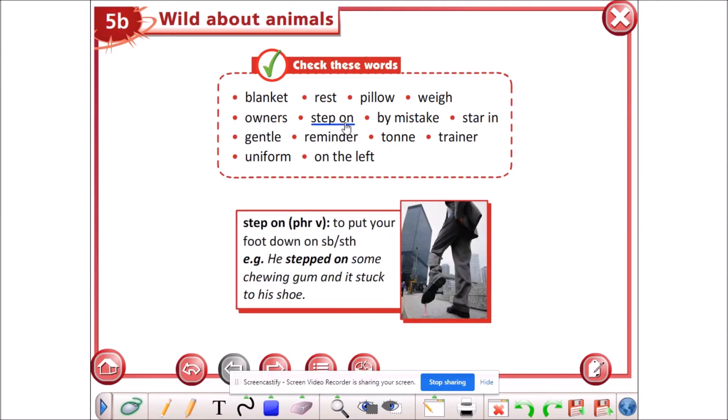Step on is a phrasal verb. It means to put your foot down on something. For example, he stepped on some chewing gum and it stuck to his shoe, as you can see in the picture.